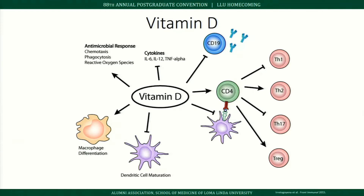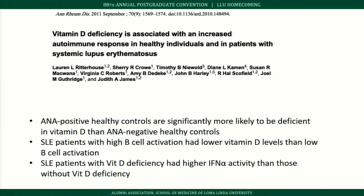A study compared 32 European-American females with SLE to 32 matched healthy controls. Healthy controls who were ANA-positive were more likely to have vitamin D deficiency. In lupus patients, high B cell activation — associated with more disease damage — correlated with lower vitamin D levels, and vitamin D deficiency correlated with higher interferon-alpha levels. The lower the vitamin D level, the higher the disease activity.